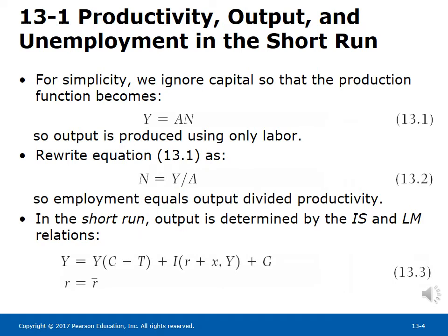13-1 Productivity, output, and unemployment in the short run. For simplicity, we ignore capital so that the production function becomes y equals A times n. So output is produced using only labor, as shown by equation 13.1. Rewriting equation 13.1 as n equals y over A, employment equals output divided by productivity, as shown by equation 13.2.